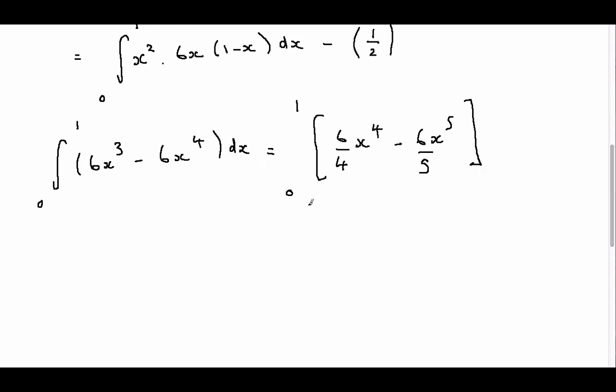So all we need to do is substitute in our limits. So we'll get 6 over 4 or 3 over 2, 1 to the 4 minus 6 over 5, 1 to the 5. Now all of this next part is going to be 0 because 0 to the 4 is 0 and 0 to the 5 is 0. So all we're going to end up with is 6 over 4 minus 6 over 5 and that can be simplified to give us 3 over 10.